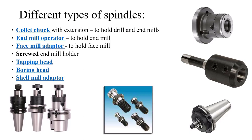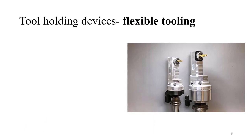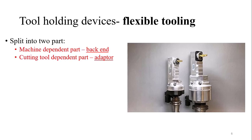The second type is flexible tooling, which represents the future of CNC machines. Flexible tooling means you can adjust any type of tool on this machine. It is divided into two parts: the first is the machine-dependent part, also called the backend, which is connected to the machine; the second is the cutting-tool-dependent part, called the adapter, in which the tool is held. This adapter part is additional compared to spindle tooling.